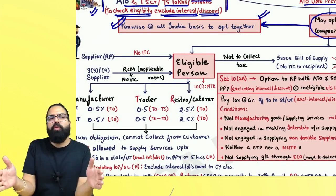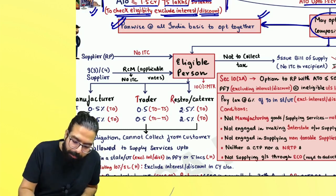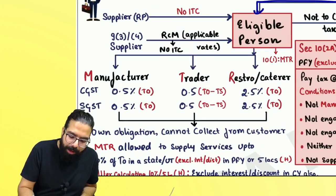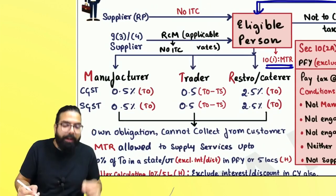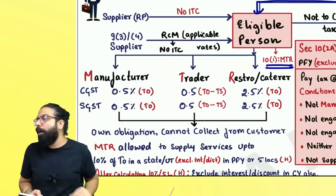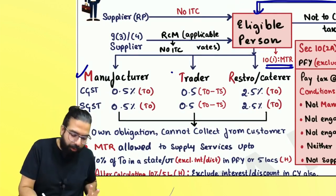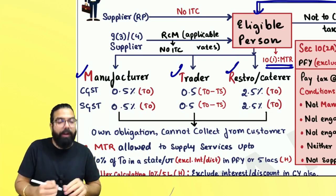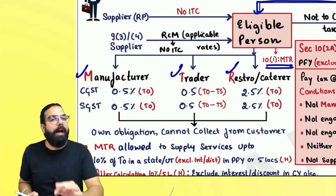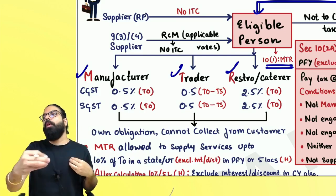It cannot happen that if you have two registrations, one is under normal registration and one is under composition registration — that is not possible. The eligible people under Section 10(1) are MTR: M for Manufacturer, T for Trader, and R for Restaurant.